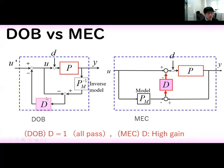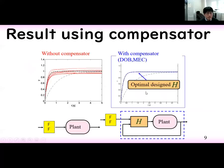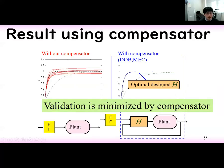The differential compensator D is given as follows. In the case of Disturbance Observer, the filter D is given as an all-pass filter. On the other hand, in the case of MEC, D is given as a high-gain filter. By using this framework, the perturbation is minimized by using the compensator — either Disturbance Observer or Model Error Compensator.